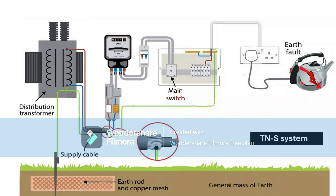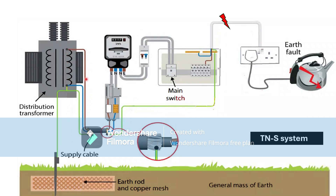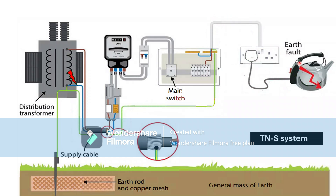In the case of a TN-S system, if there is a fault in an appliance, the fault current will start flowing. It goes through the line, through the CPC to the earthing conductor, through the armor, back to the supply transformer, into the meter, from the meter to the main switch, and then it trips the circuit breaker.